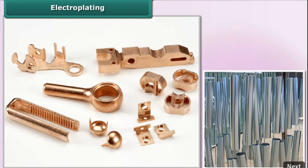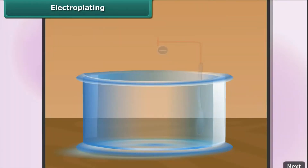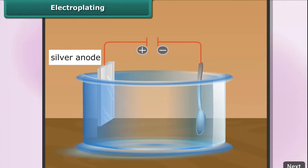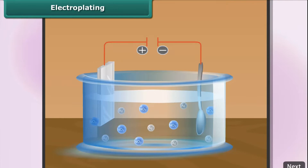Electroplating: It is common practice to coat articles made of cheap metals such as iron or steel with a thin layer of a less reactive metal. A steel object — for example, a spoon — is connected to the negative terminal of the current source. The positive terminal is connected to a bar of the metal, for example pure silver. Thus, the spoon acts as the cathode in the electrolysis, while the bar of the metal acts as the anode. The electrolyte is a solution of salt that contains the ions of the anode metal, for example silver nitrate.